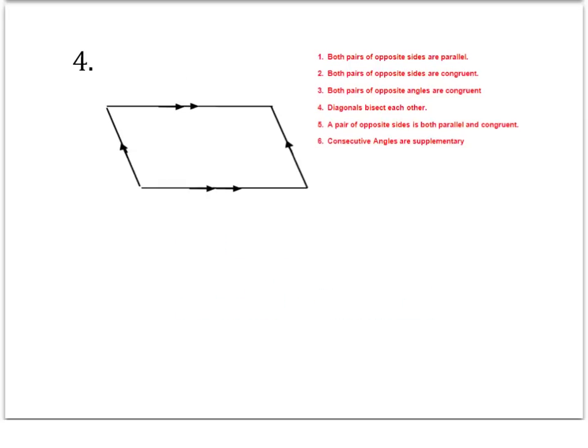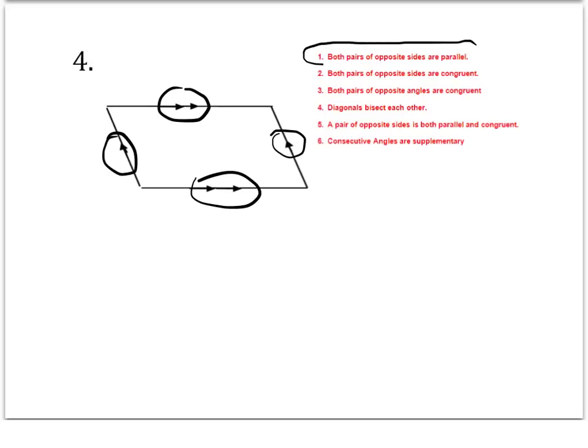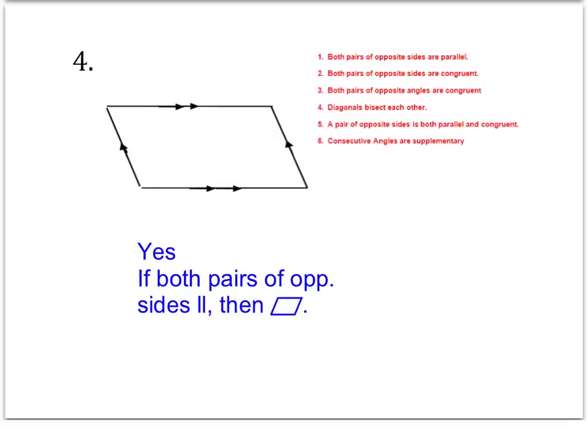Number four tells us that opposite sides are parallel. We know that this is our basic figure for a parallelogram, and this matches the first test. If both pairs of opposite sides are parallel, then it is a parallelogram.